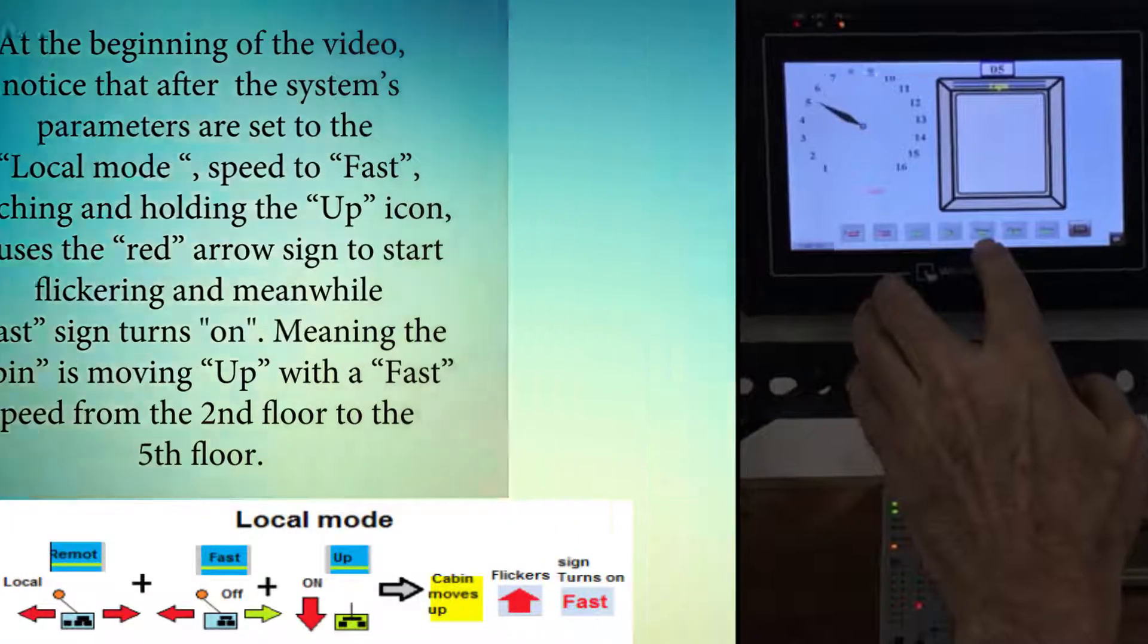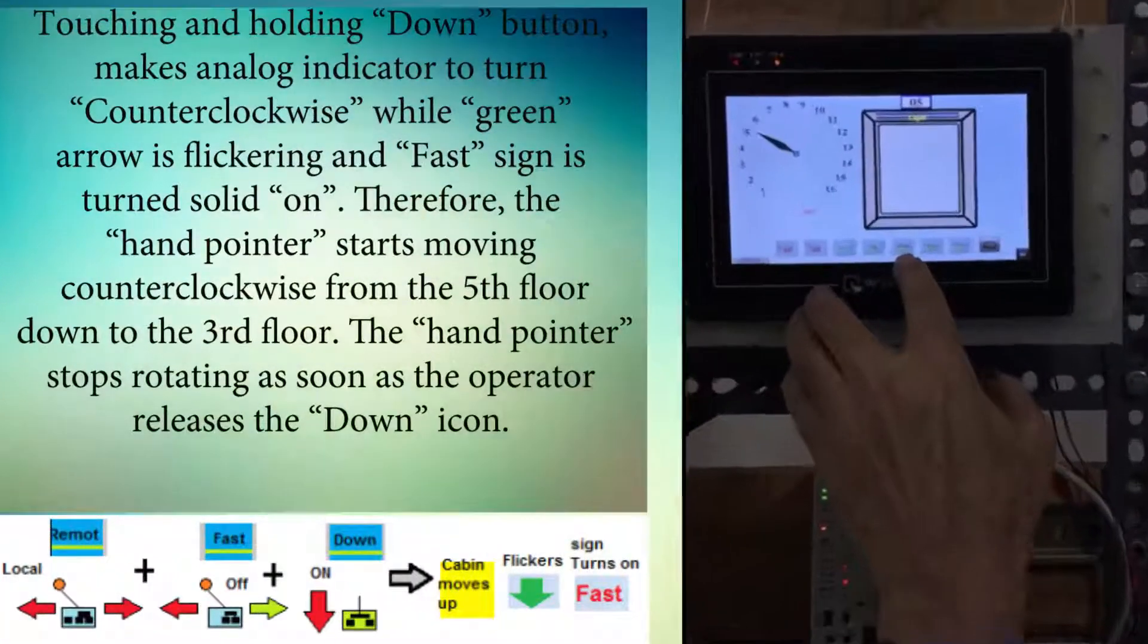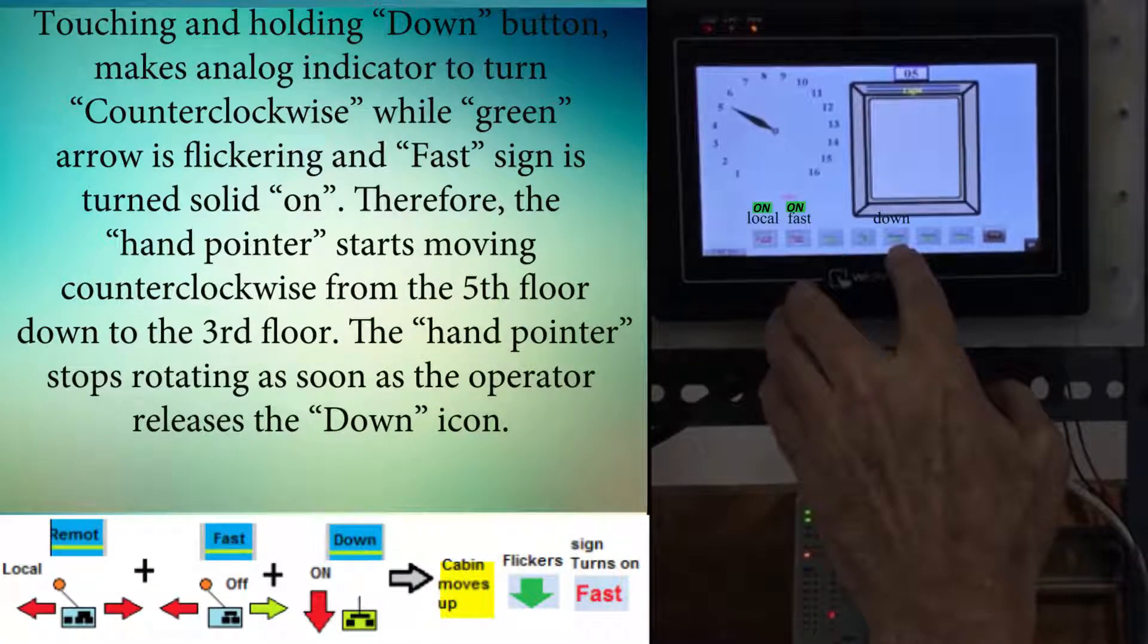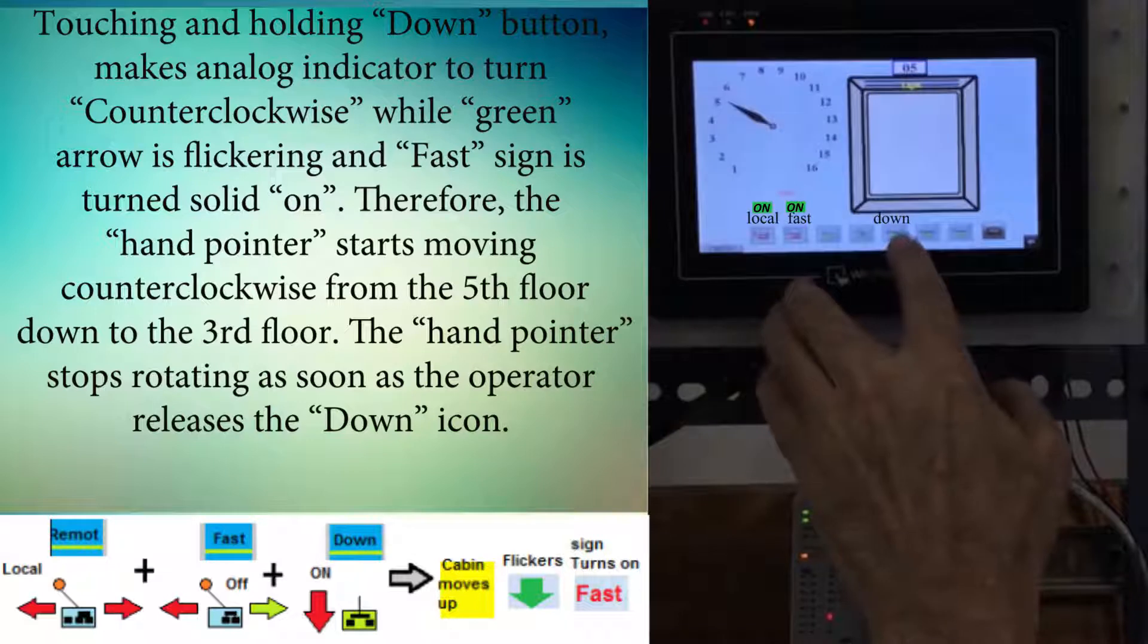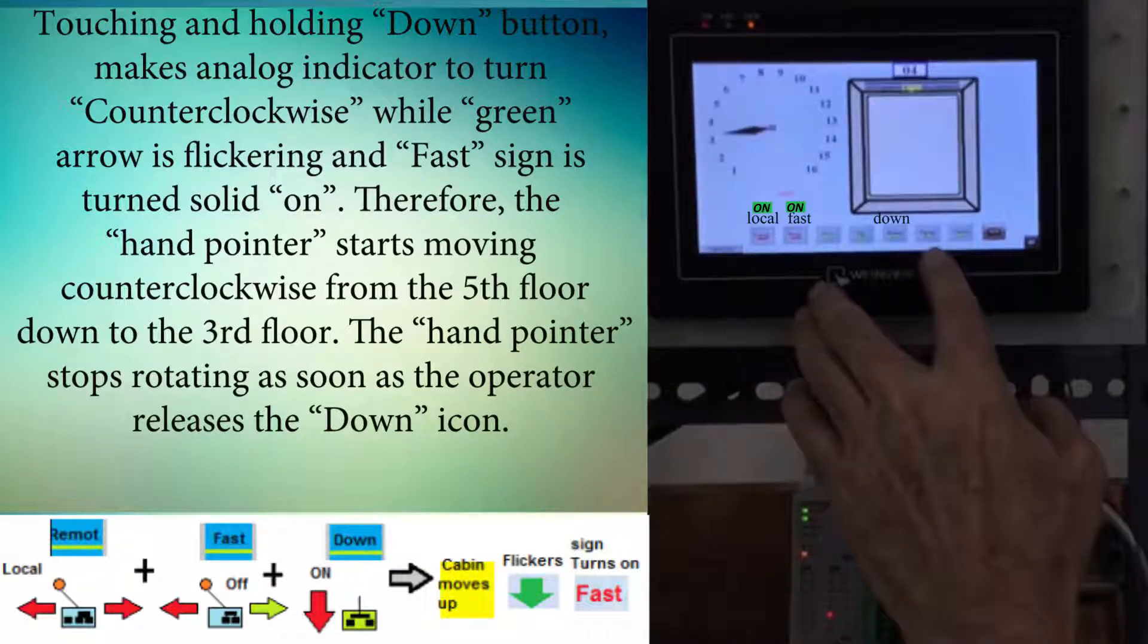Touching and holding the down button makes the analog indicator turn counterclockwise while the green arrow is flickering and the fast sign is turned solid on. Therefore, the hand pointer starts moving counterclockwise from the fifth floor down to the third floor. The hand pointer stops rotating as soon as the operator releases the down icon.